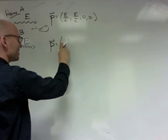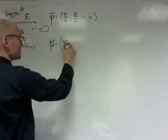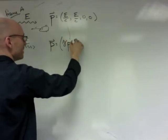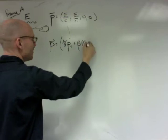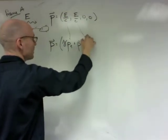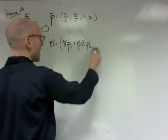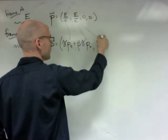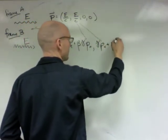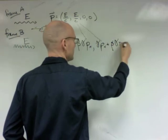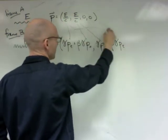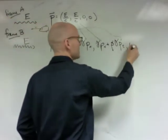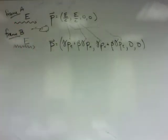Well, the time component is gamma times Pt, which is that, plus beta gamma times Px, which is that. And then the x component is going to be gamma Px, which again is that, plus beta gamma Pt, which is that. Comma zero, comma zero, because we're still dealing with just the x versus t case.